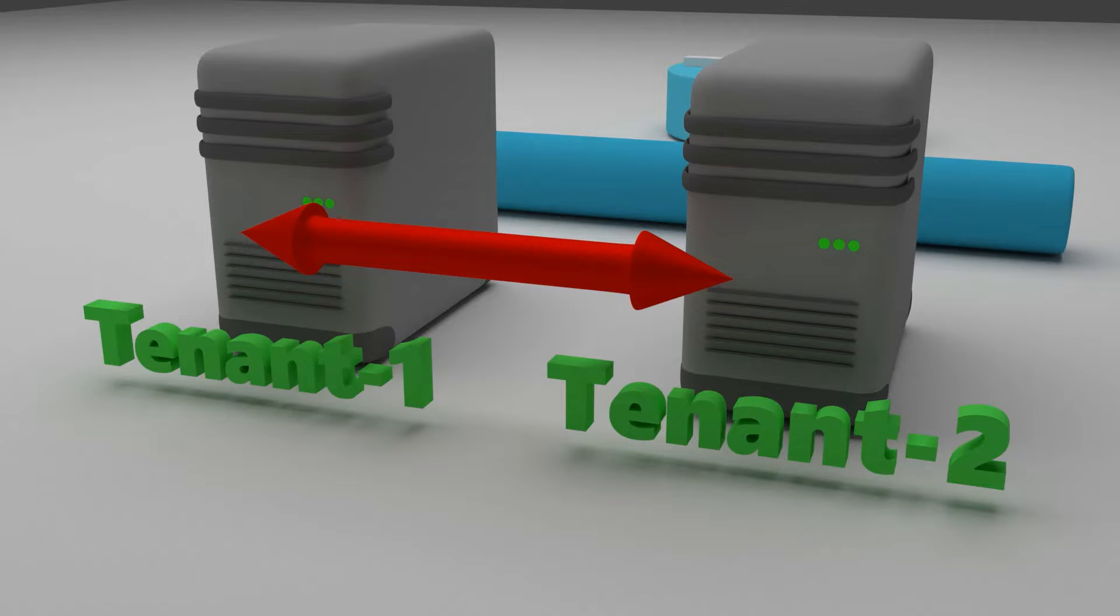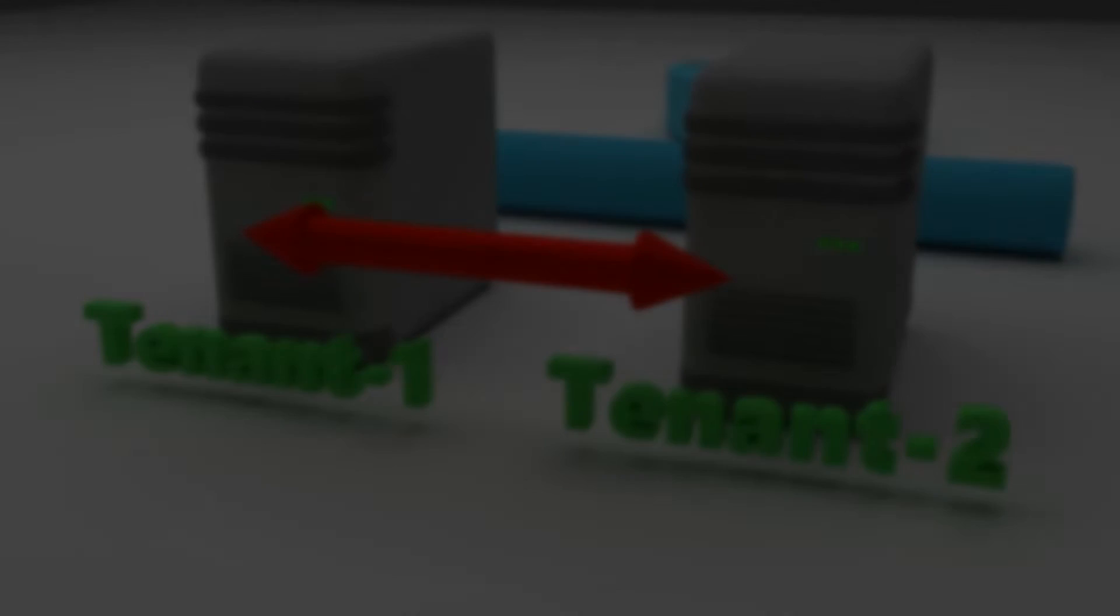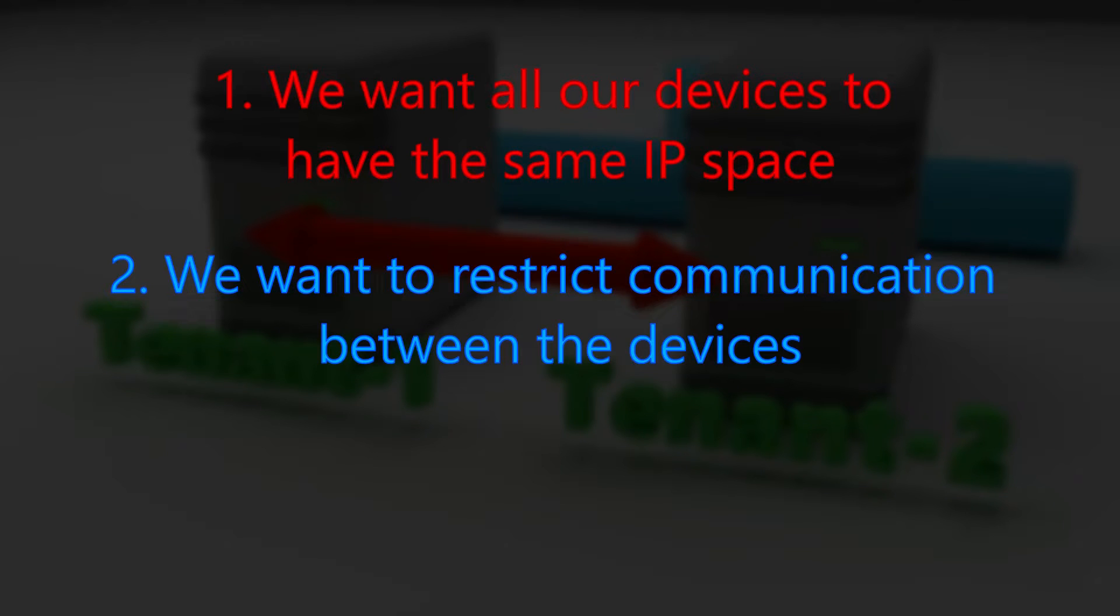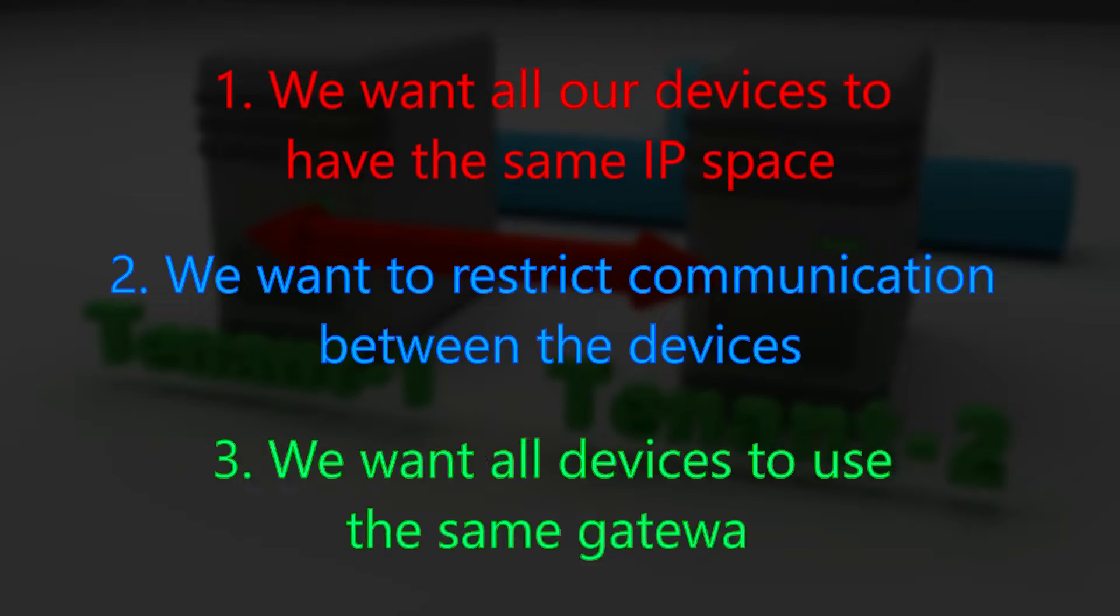We could put them all in different VLANs, but that's a lot to manage, because it would require many different subnets, plus we'd have to configure a default gateway for each one. So we have three requirements. One, we want all our devices to have the same IP space. Two, we want to restrict communication between the devices. And three, we want all devices to use the same gateway. Do you think that's too much to ask? Hang around and we'll see.